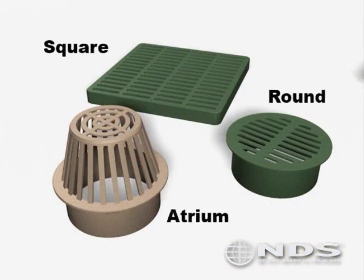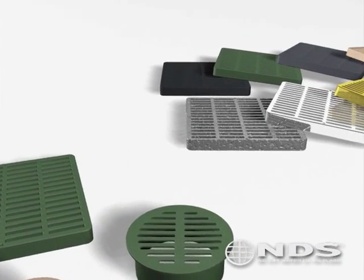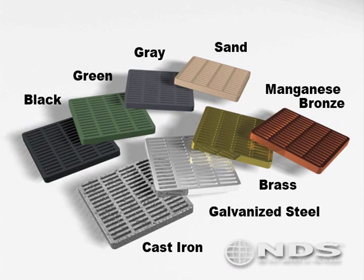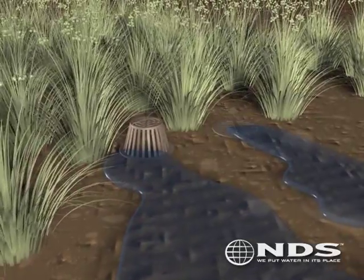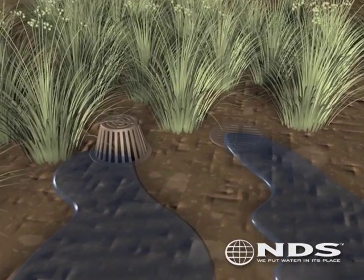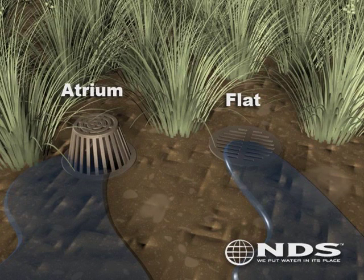NDS has a complete line of grates that can blend in with just about any landscape. NDS grates come in different colors: black, green, gray, and sand. NDS grates also come in cast iron, galvanized steel, brass, and even manganese bronze. Grates for catch basins come in two different types: flat and atrium. Atrium grates are domed above the landscape to prevent debris and mulch from clogging it, as they would clog a flat grate. Atrium grates require less maintenance and handle more runoff water than flat grates, but can only be used in areas where there is no traffic, such as flower beds.